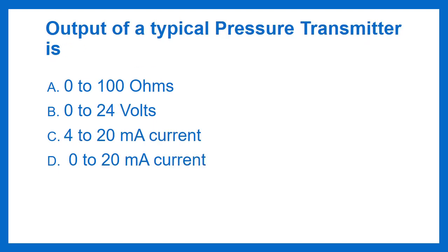Output of a typical pressure transmitter is: Option A - 0-100 ohms, Option B - 0-24 volts, Option C - 4-20 mA current, Option D - 0-20 mA current. The answer is Option C: 4-20 mA current.